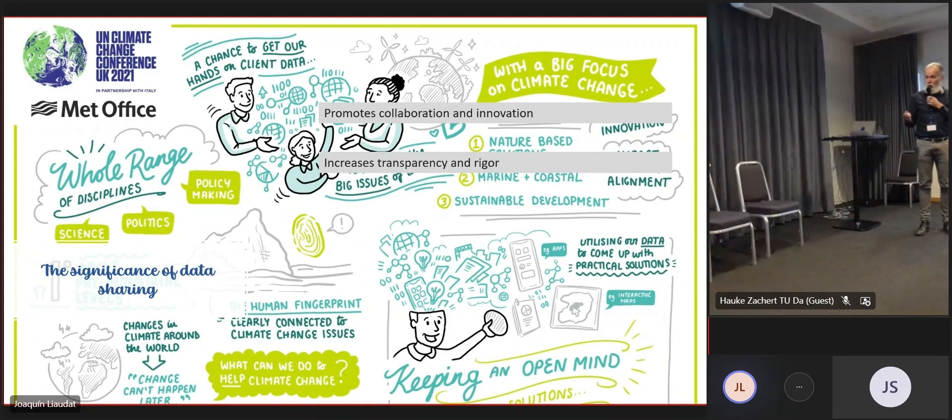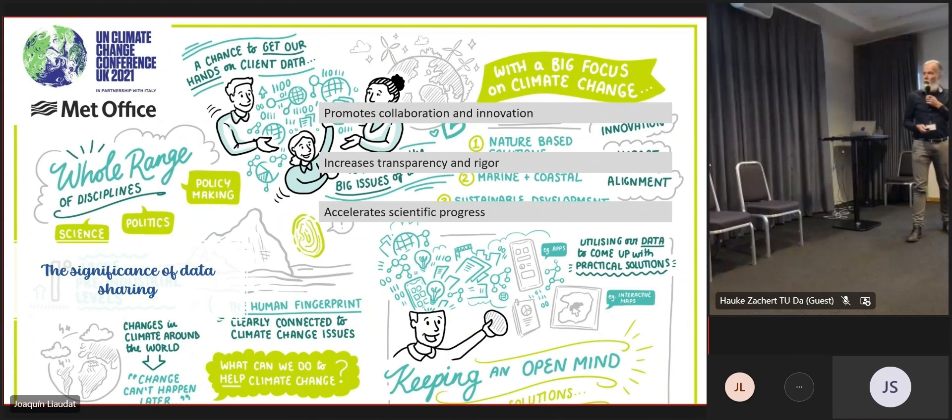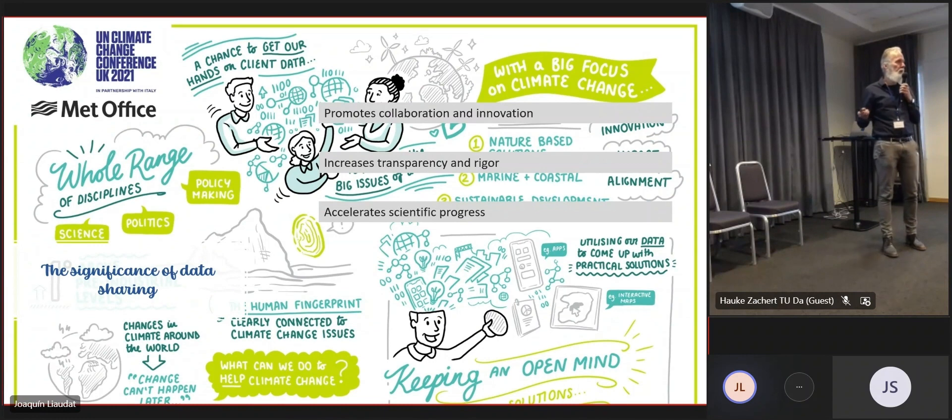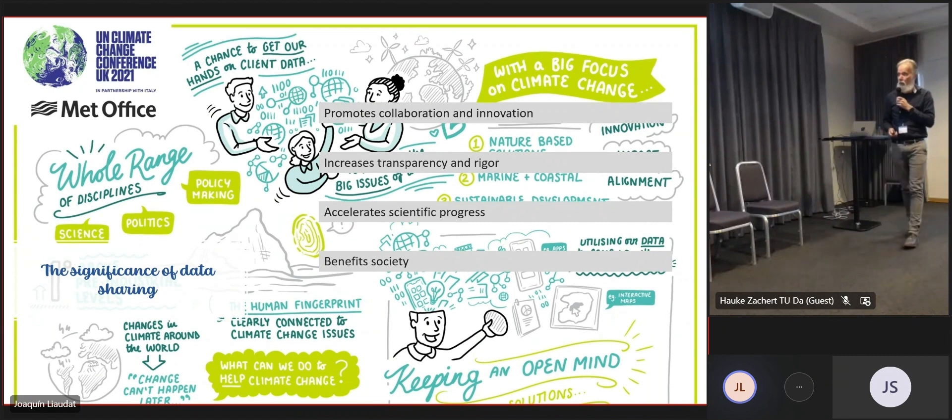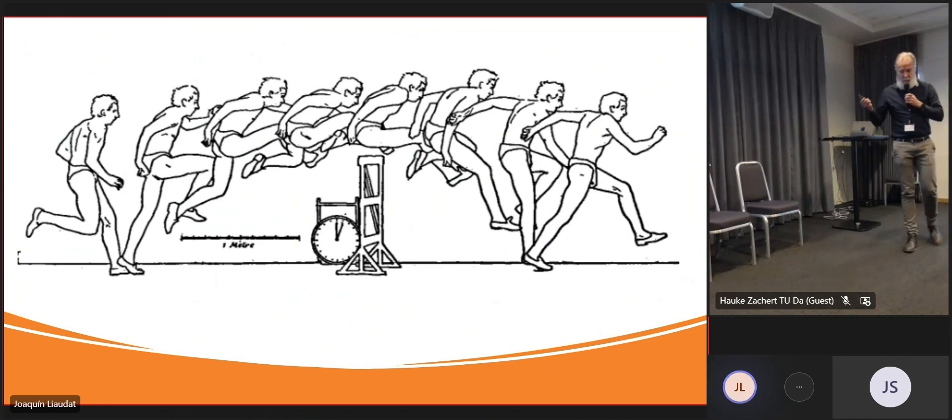The third is acceleration of scientific progress. If you share your data, another researcher can use your data and build upon that data, so duplication will be less. And the fourth, of course, it benefits society. If we can collaborate together or co-create together, we can come up with solutions much faster, probably much better, and more durable.